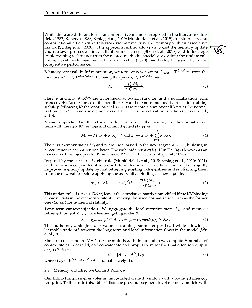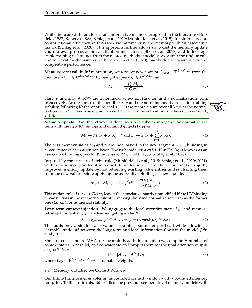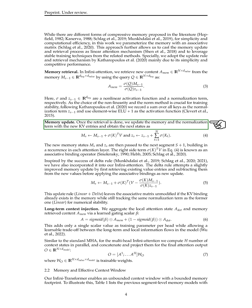For memory retrieval in InfiniAttention, we get new content A_mem from the memory M_S1 using the query queue. We use a non-linear activation function sigma and a normalization term Z_S1 to retrieve the content. After retrieval, we update the memory and normalization term with new key-value entries to get the next memory states M_S and Z_S, which are then passed to the next segment, creating a recurrence in each attention layer.